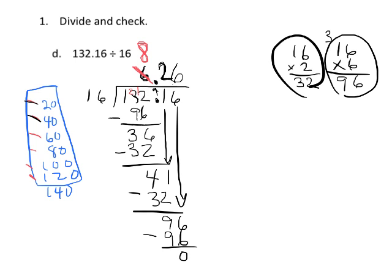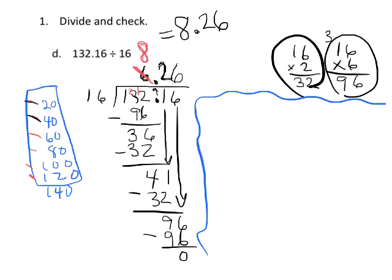We should check it. So the way we're going to check it is multiplying the quotient by the dividend. Our quotient is 8.26, we're going to multiply by 16, and we're going to hope that we get 132.16.